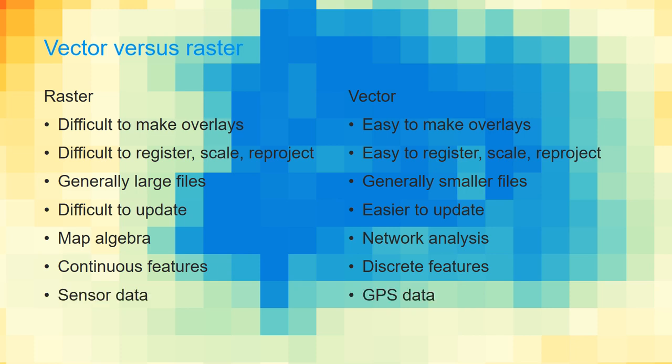Raster data originates mostly from data from sensors — this can be remote sensing, drone images, or all kinds of sensor data. For vectors, the data can come from GPS devices or be digitized from a map.